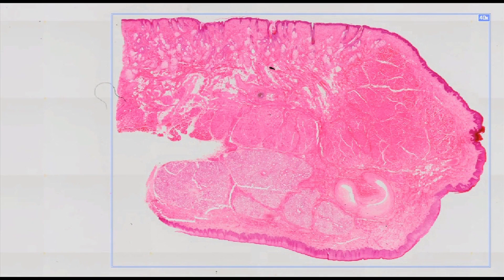The lip H&E staining: a sagittal section through the lip stained with a routine histological staining method, hematoxylin and eosin. The lip is a fold of the mouth wall covered with skin on the outside and with oral mucosa on the inside. Between them there are bundles of muscle fibers that make up the orbicularis oris muscle.